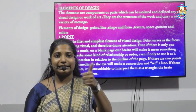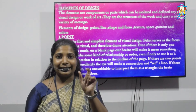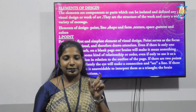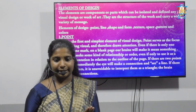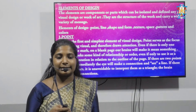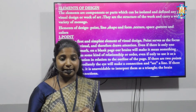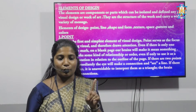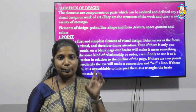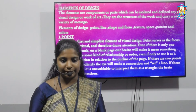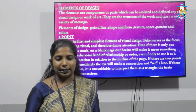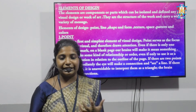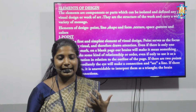The first element is point. A point is a tiny solid circle and is the first and simplest element of visual design. A point serves as a focal element of something visual and therefore draws attention. Even if there is only one mark on a blank sheet, our brains will make it mean something — our brain seeks some kind of relationship or order.